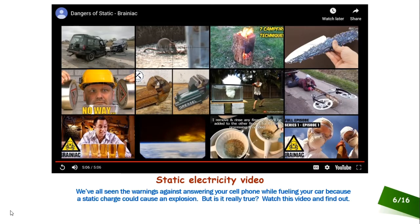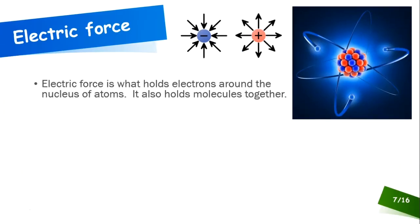You can see it was a static charge that was generated. That's why the guy was standing in the bucket — if he wasn't, most of the charge he generated would have gone into the ground. Standing in the bucket insulated him from the ground, allowing charge to build up.